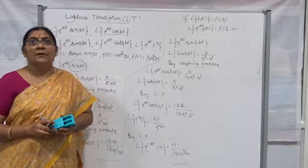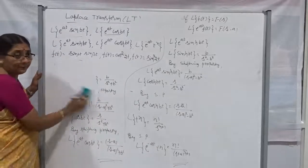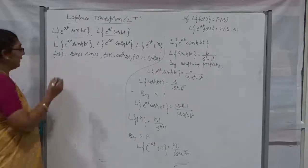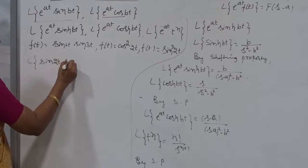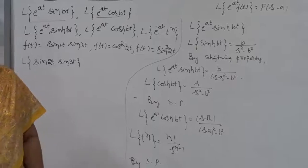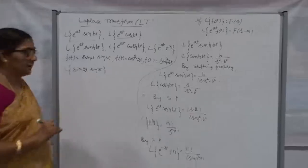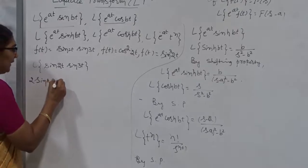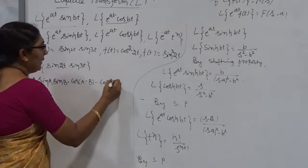Now moving to the next function: how to find the Laplace Transform of sin 2t into sin 3t. We cannot find out the Laplace Transform of a product of two trigonometric functions directly, since we have no standard formula for that product form. So we are going to use the transformation formula to convert the product of two trigonometric functions into a sum or difference. The transformation formula is: 2 sin A into sin B is nothing but cos(A minus B) minus cos(A plus B).